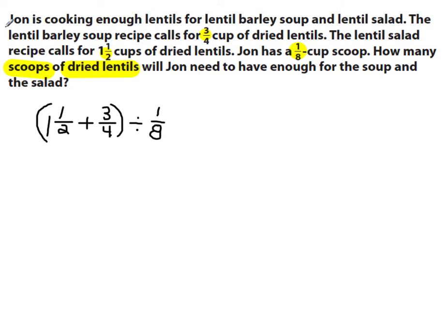Following order of operations, I have parentheses, so I need to add these two fractions first. I need common denominators. What is the least common multiple of two and four? It's four. I multiplied two by two to get four, so I multiply the numerator one by two to get two. Since four is already my LCM, I don't need to change that fraction. I'll divide the result by one-eighth.